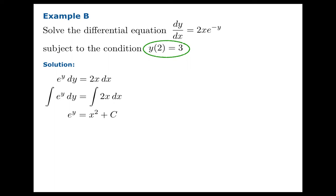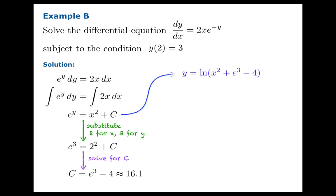we might want to figure out the constant of integration right now. When x equals 2, y equals 3. So let's substitute that information into the formula for the general solution. And we discover that the c we need to choose in this case is e cubed minus 4, which is about 16.1. So the particular solution in this case is y equals ln of x squared plus e cubed minus 4.